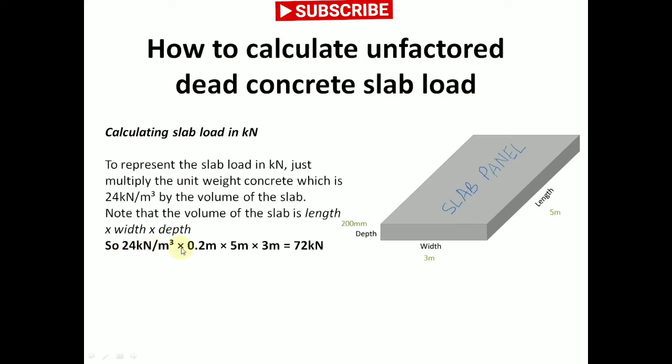So 24 kN per meter cubic times 0.2 meters times 5 meters times 3 meters will give you a total slab load unfactored of 72 kN.